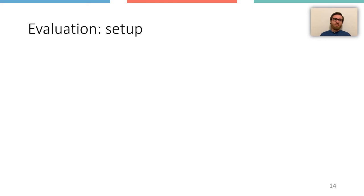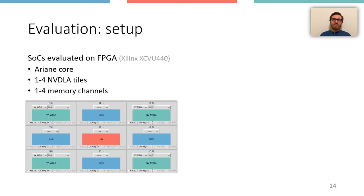Once integrated in ESP, an accelerator can be selected from the GUI and instantiated in multiple tiles. We demonstrate the flexibility and the integration capabilities of ESP by generating various SoC architectures that include one processor tile with Ariane core and different numbers of memory tiles and third-party accelerator tiles containing NVDLA. The screenshot shows an SoC configuration in the ESP GUI with four NVDLA instances and four memory channels.